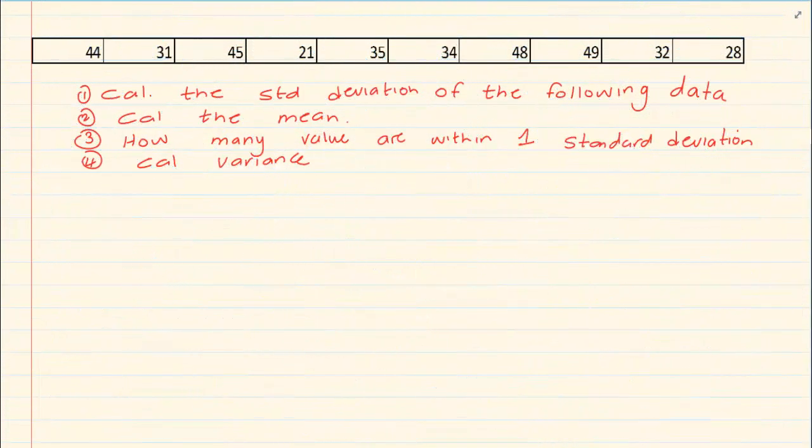The first question says calculate the standard deviation of the following data. In order to calculate the standard deviation you must use your calculator. You are going to press Shift, Mode, then go down and press number 3 to put frequency on. It is best to have your frequency on all the time. Then press Setup 2 for stats, number 1 for variance.